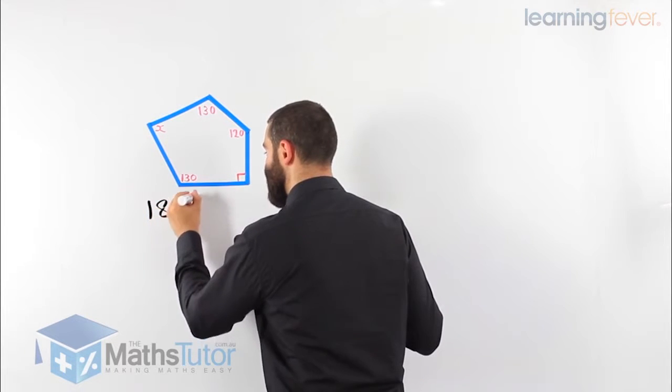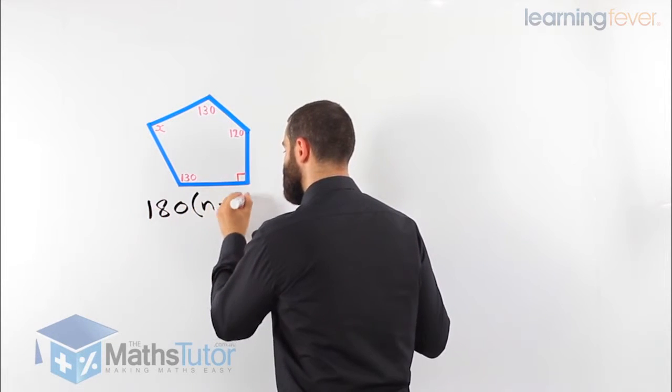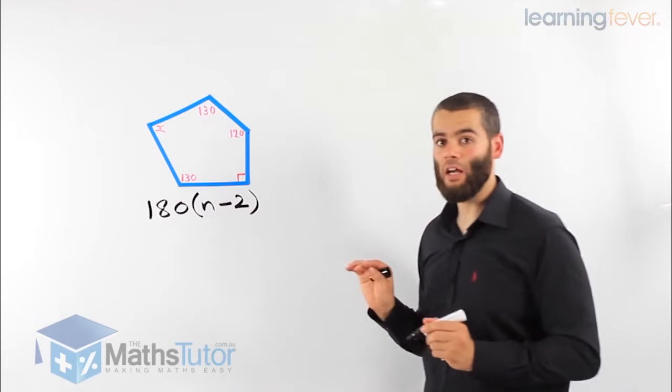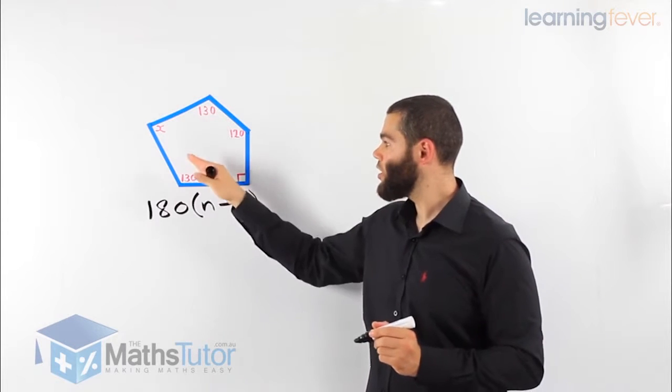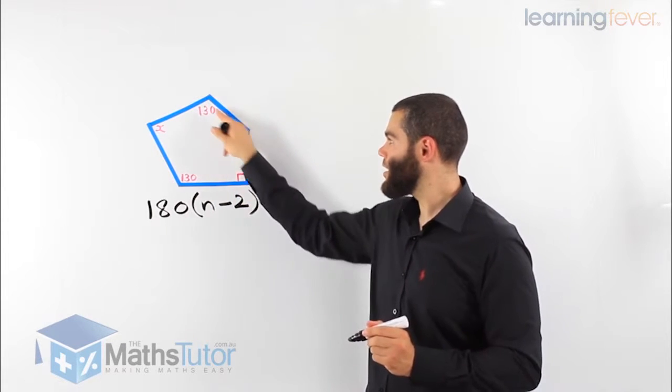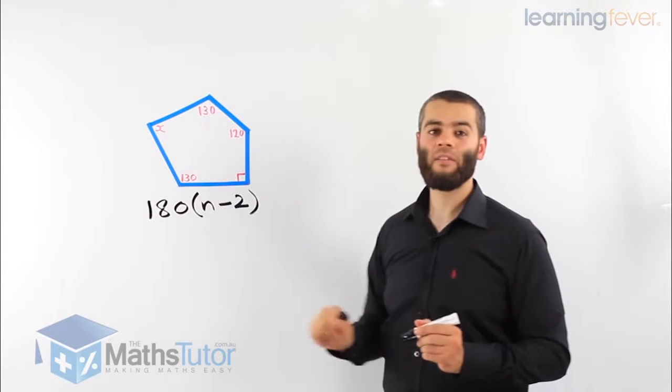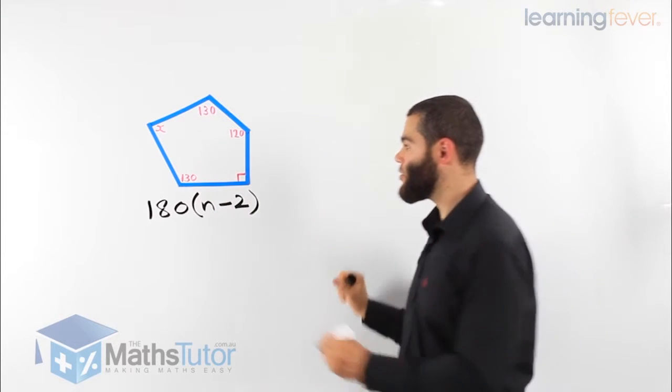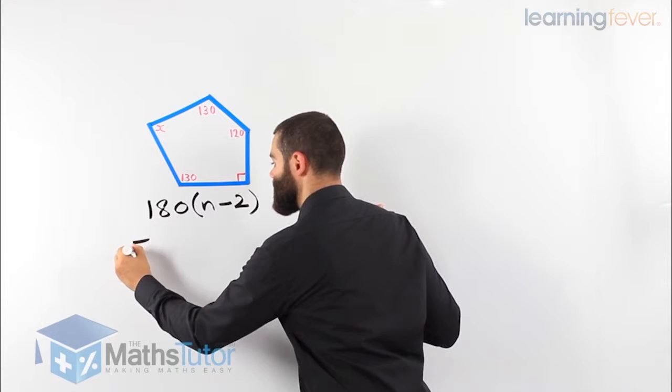So to find what all these angles add up to, we use the angle sum formula. We would like to know the total, then take them away from the total, we're going to find x. So to find the total, we use the angle sum formula once again,